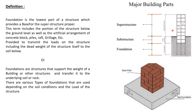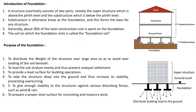As you can see in picture number 1, the structure above the plinth level is known as the superstructure and the structure below the plinth level is known as the substructure or foundation, which has the soil or a concrete bed. In the second picture, this is a pad foundation. Foundations are structures that support the weight of a building and transfer it to the underlying soil or rock. A structure essentially consists of two parts: the superstructure above plinth level and the substructure below plinth level, which is otherwise known as the foundation and forms the base for any structure.